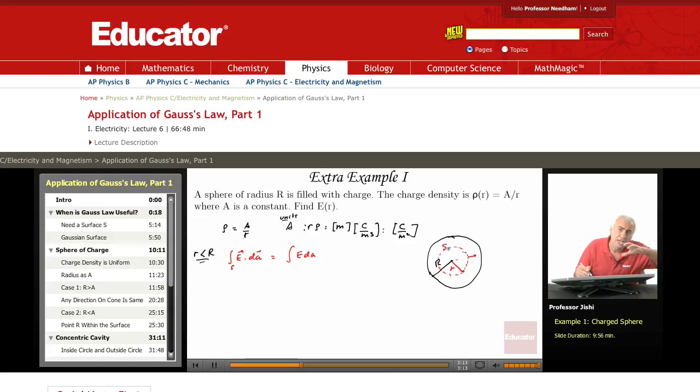Since E does not change as we move on the surface, we can take it outside the integral. So it becomes E times integral dA, which is E times 4π R squared. This is E evaluated at R. But according to Gauss's law, this is equal to charge enclosed divided by ε₀.